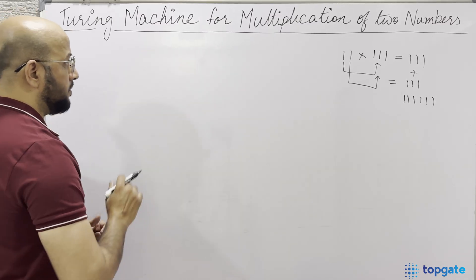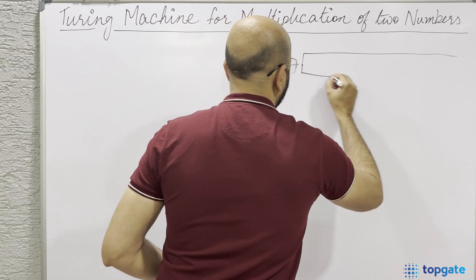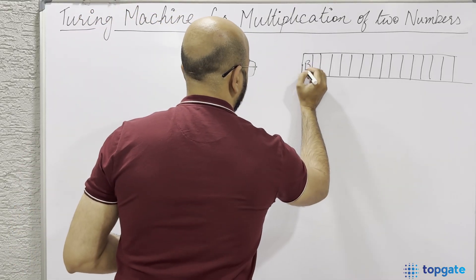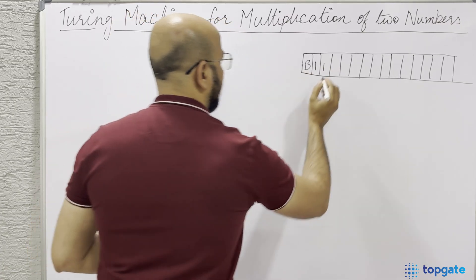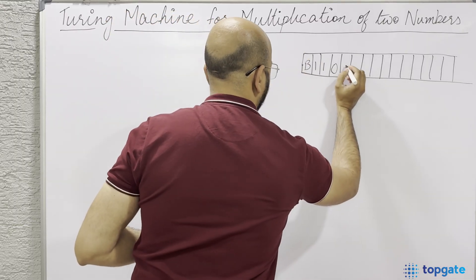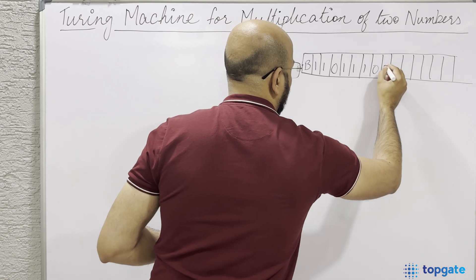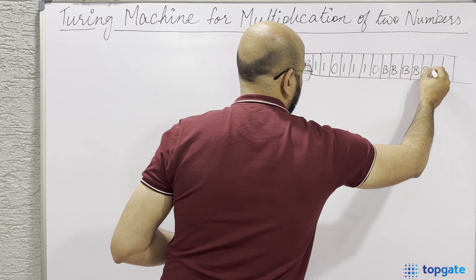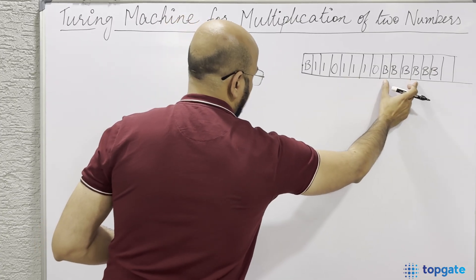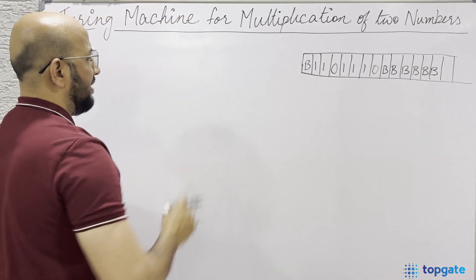Let us see how we multiply these two numbers in unary form. I will take an input tape with infinite cells. I will take two numbers: first a blank B, then the first number - let's say two - then a separator (zero) to indicate the end of the first number, then the second number - let's say three - then another separator. After this separator on the right hand side, I will write my output. So this is my first number, this is my second number, and after the separator I have my output area.